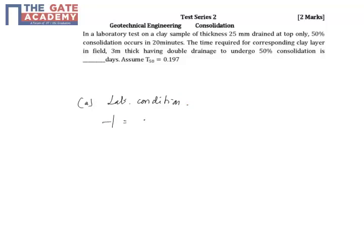H thickness is equal to 25 mm, that is equal to 0.025 meter. Now CV is equal to TV50 into H square by T, which is equal to 0.197 into 0.025 whole square divided by 90.